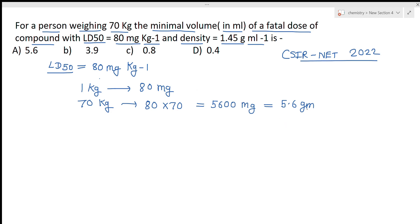We can write this will be equal to 5.6 grams. So the lethal dose 50 for this person is 5.6 grams. It means if this person is taking 5.6 grams of this dose then there are 50 percent chances when it will die. Now we have given density and we have to find out the minimum volume. It means how many mls we are giving to that person then it will undergo fatality.